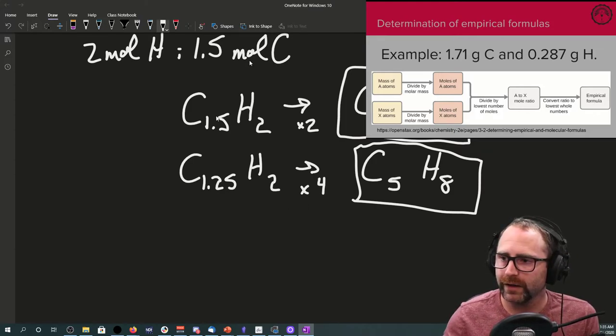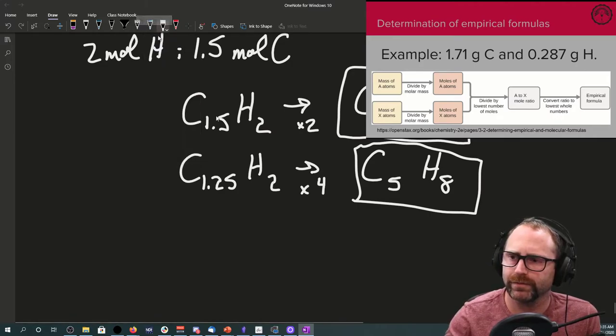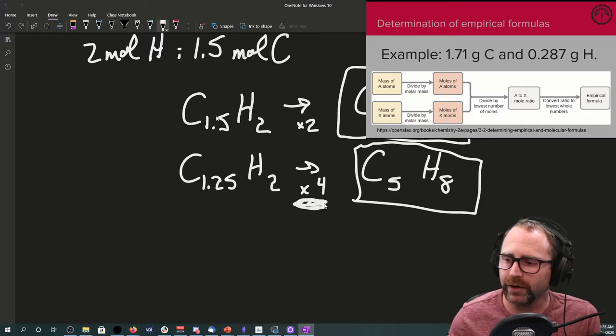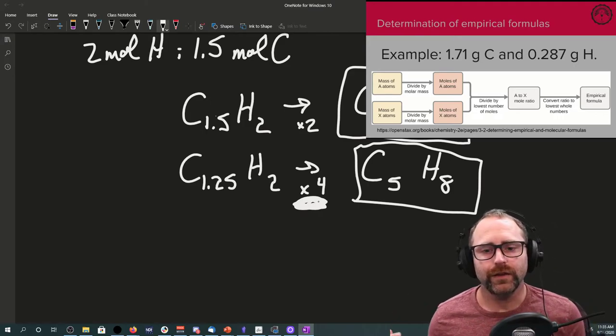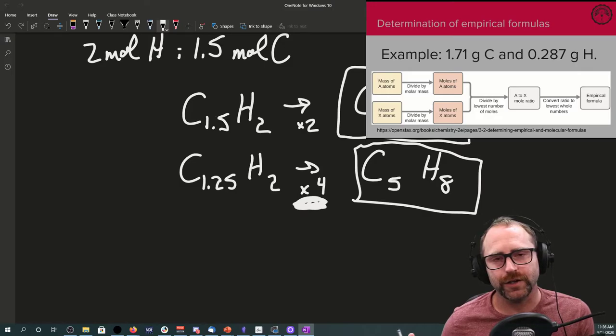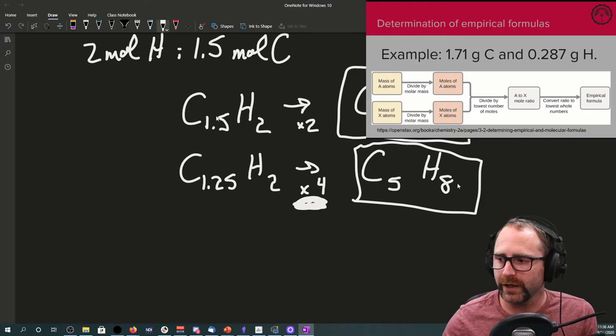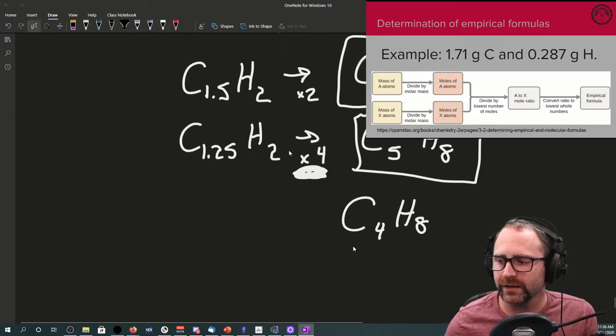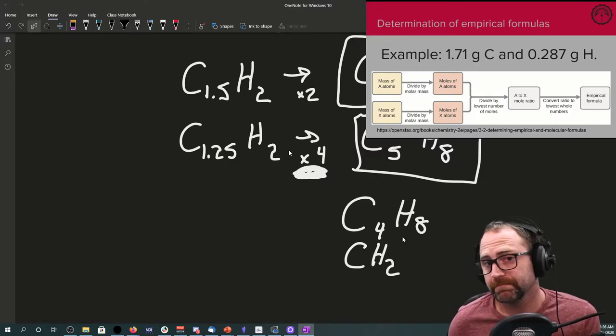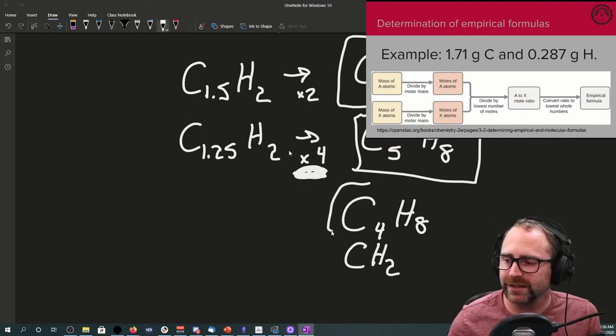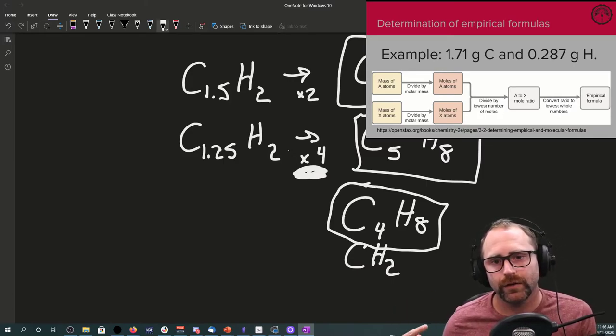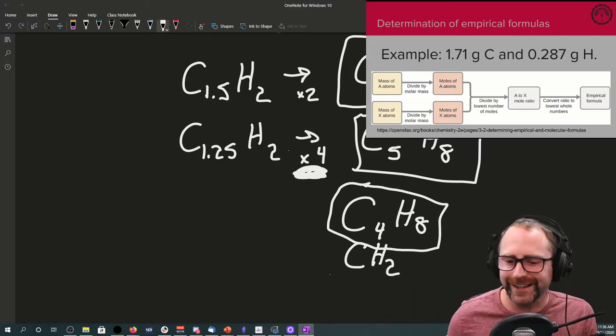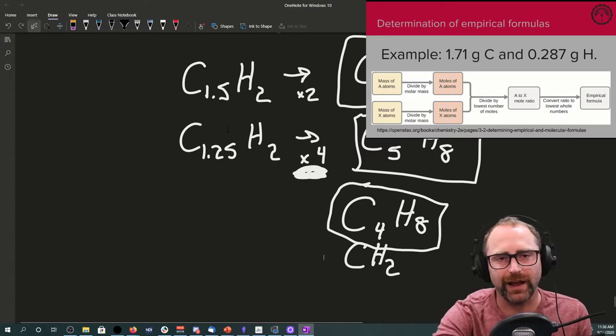So, you can really multiply by whatever number right down here that's appropriate so that you still have the lowest whole number ratio possible. The worst thing that's going to happen is you multiply by a number that's too big. And so, then you end up with something like C4H8. Well, you could say, I can simplify this to CH2 if I just divide everything by 4. And that's what you would do because this right here, the C4H8, is not the lowest whole number ratio. Thus and therefore, it is not the empirical formula. The CH2 is. So, that is the basics behind empirical formulas.